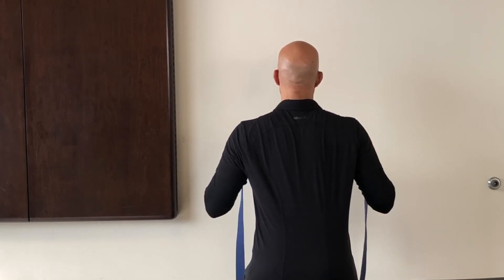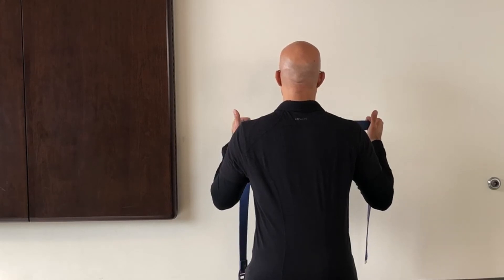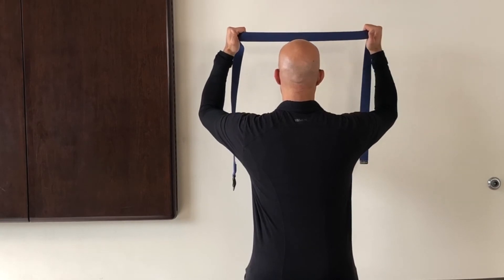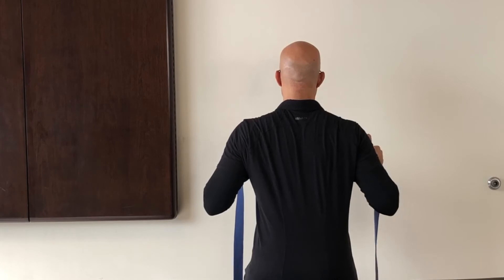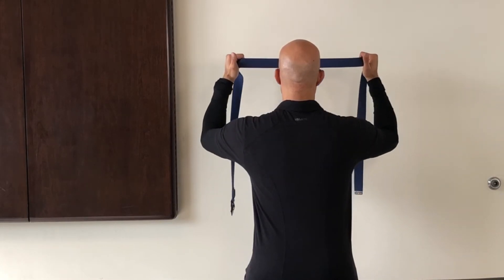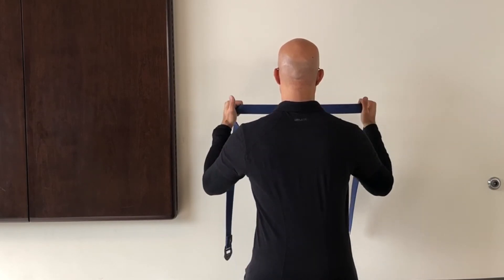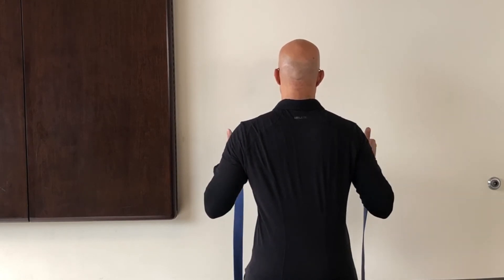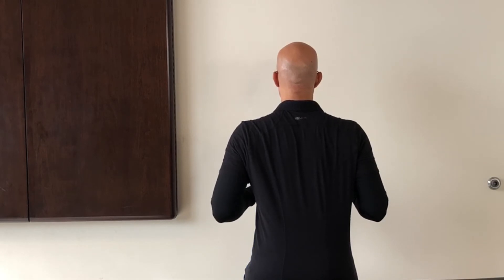Once clients develop more optimal alignment and control in this position, they can start to move. We'll have clients breathe in, and as they breathe out they start to lift their arms up maintaining a 90-degree elbow bend and that nice aligned and controlled position. They'll breathe in to come back down, then breathe out as they bring their arms back to the overhead position. Generally we'll have clients do three to five repetitions per set.